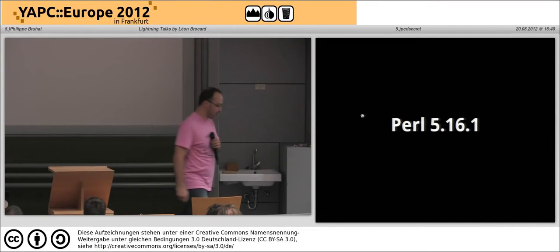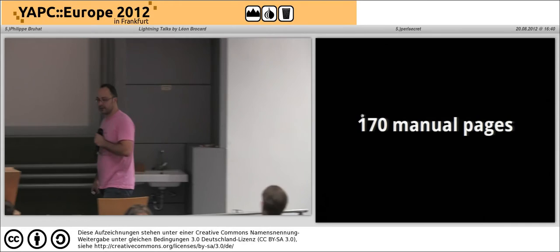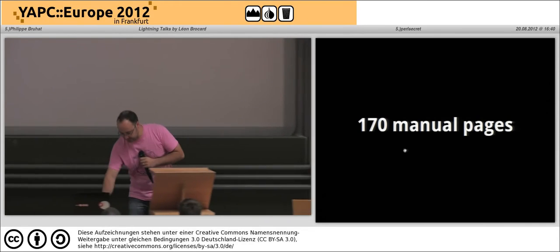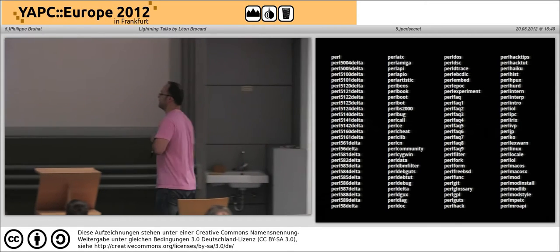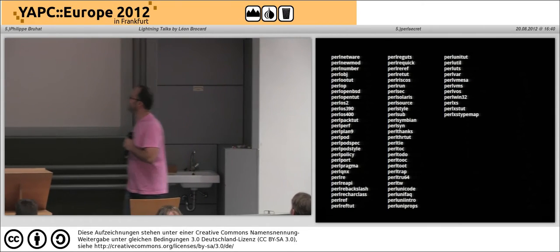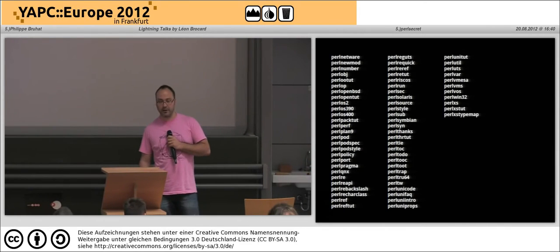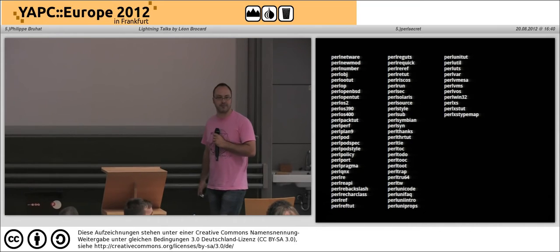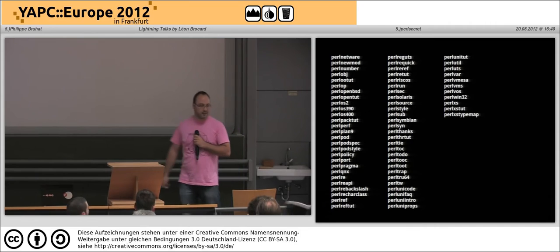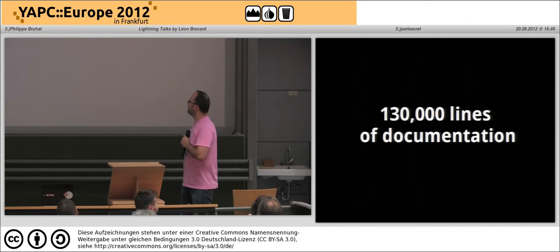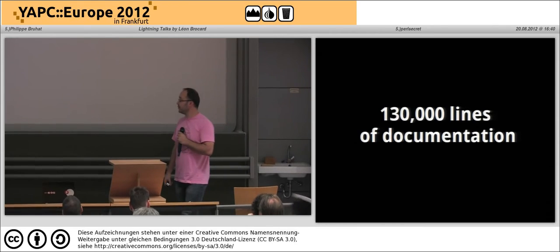So a few weeks ago, Perl 5.16 came out, and it has 170 manual pages. You know how many lines of documentation that is? I asked mirrored, and he said probably around 300 lines per file. Anyway, that's a lot of documentation.